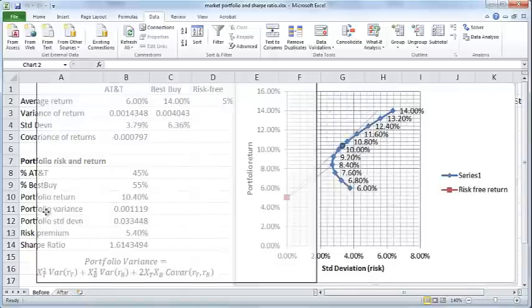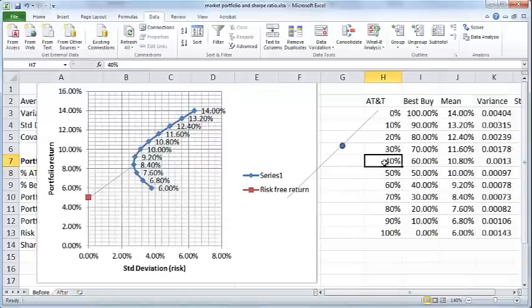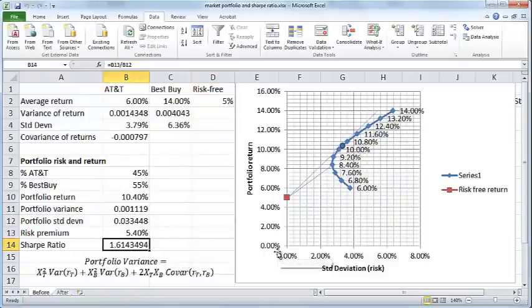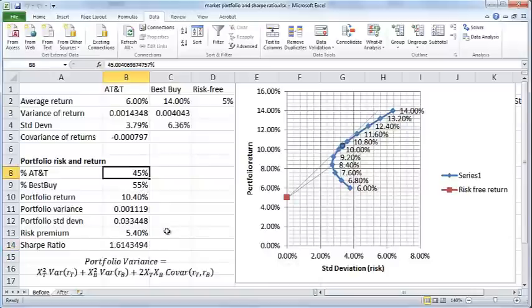So as opposed to having 50-50, if you have a little bit less of AT&T and a little bit more of Best Buy, then that results in a higher overall return for your portfolio than otherwise. So that's how you basically make use of Sharpe ratio in order to find out the optimum combination of stocks in your portfolio that you can combine with your risk-free rate to arrive at a portfolio of your desired risk level while maximizing the return for that desired risk level.